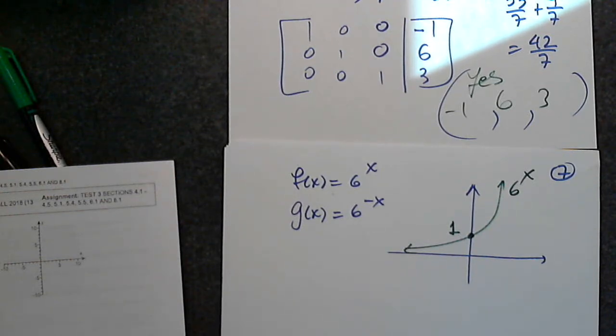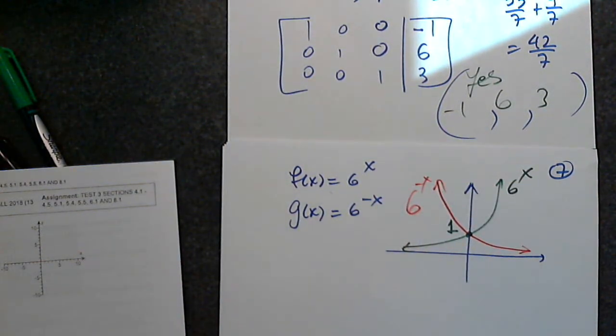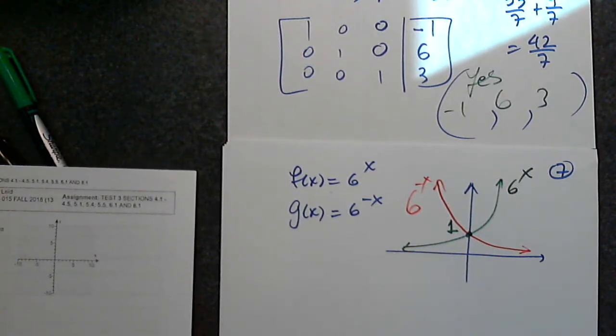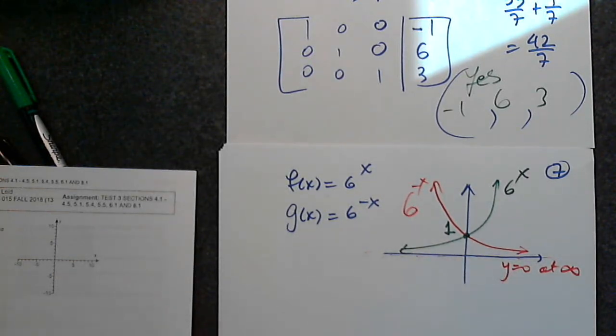Now, what transformation is when I change x into negative x? What transformation would that be? If you remember, positive y, negative y, x, negative x - it's a reflection with respect to the y-axis. 6 raised to negative x. Graph the function and its asymptote. So the asymptote is still y equals 0, but at infinity this time. The asymptote is the x-axis, of course.